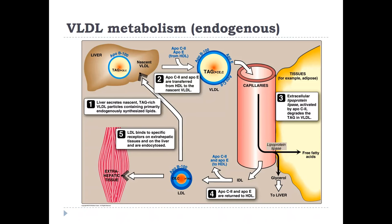Once VLDL has shed its triglyceride content, it becomes much smaller, forming the intermediate-density lipoprotein, IDL. IDL can shed its ApoC2, which has already served its purpose. IDL can either return to the liver and bind to the LDL receptor via the ApoE it still retains, or it can shed both ApoC2 and ApoE, forming LDL — low-density lipoprotein. LDL can still bind to the LDL receptor through ApoB100, which has lower affinity for the receptor than ApoE.